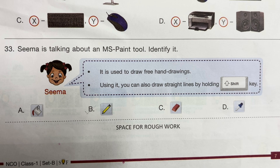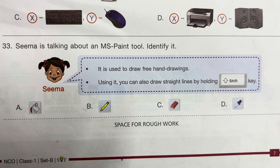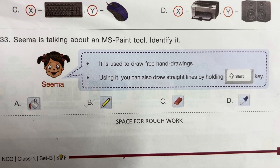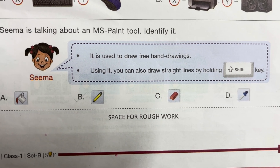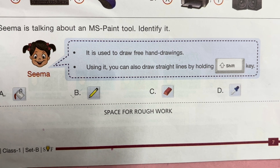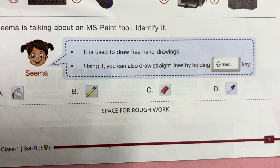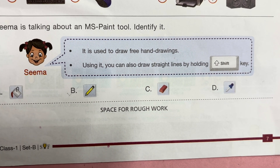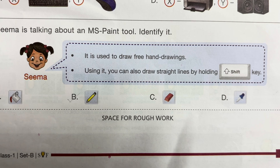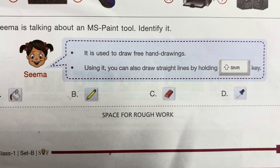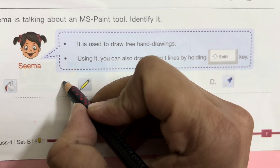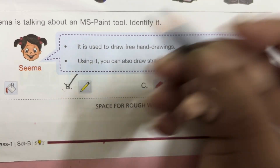Question 33: Shima is talking about an MS Paint tool — identify it. It is used to draw freehand drawings. Using it, you can draw a straight line by holding the Shift key. It is the pencil tool.